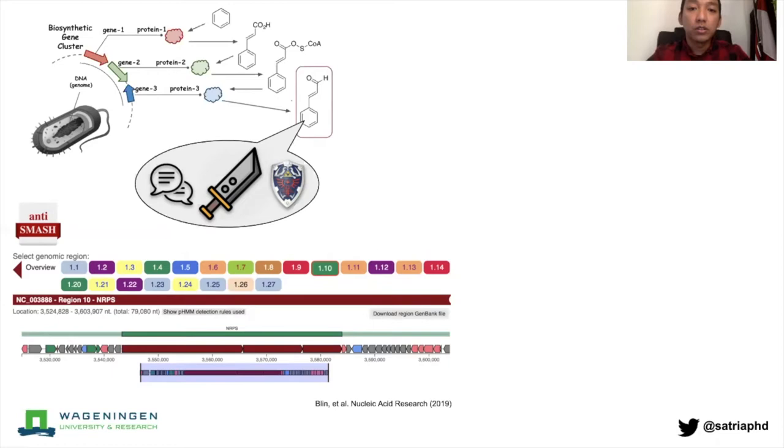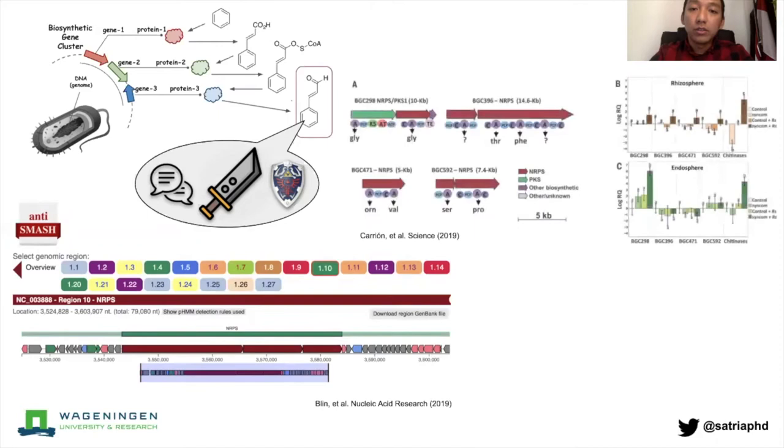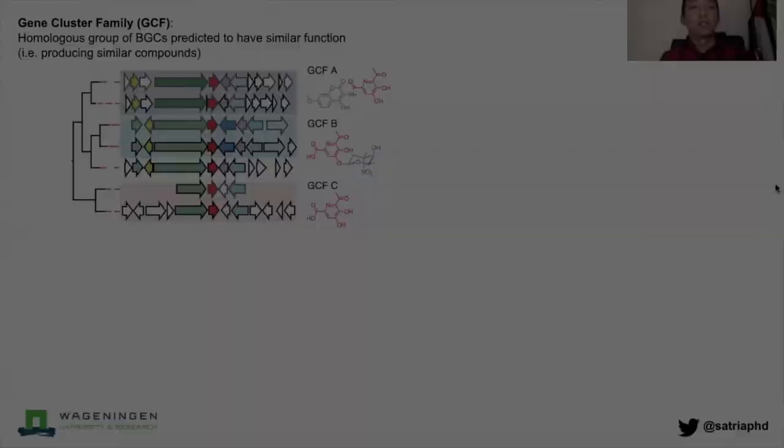For example, in a recent study that was published in Science, they found several BGCs that are correlated to the fungal suppressiveness ability or phenotype of the soil microbiome that they are currently studying.